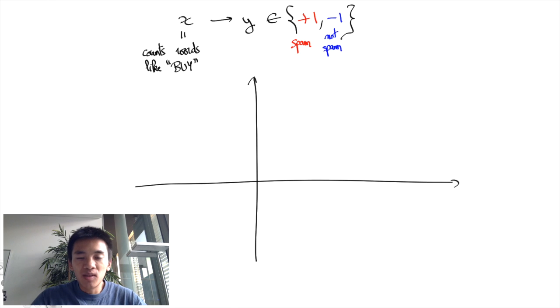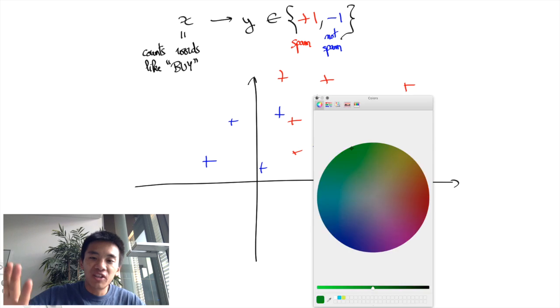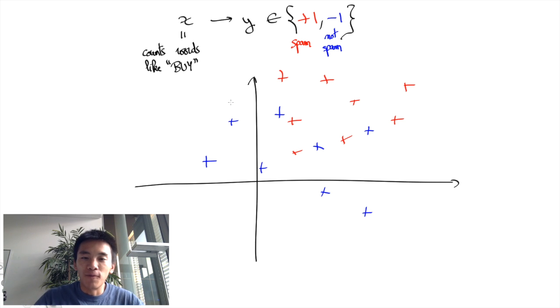One way to do so is to try to separate spam data points from not spam data points in the feature space using a hyperplane of equation w transpose x plus b.